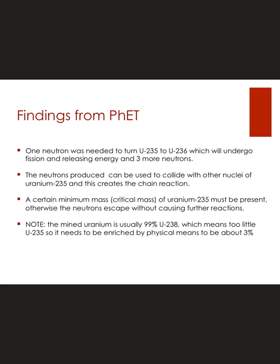Here's what I'm hoping you found out from using the simulation. One neutron was needed to go from U-235 to uranium-236. The neutron had to hit the nucleus and be absorbed. After that, the uranium-236 would actually undergo fission, releasing three more neutrons that could go on and cause another reaction, and so on and so on.